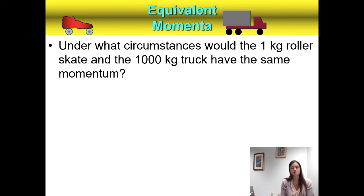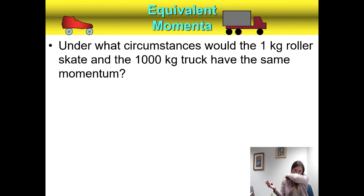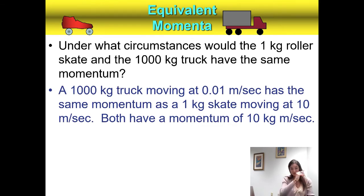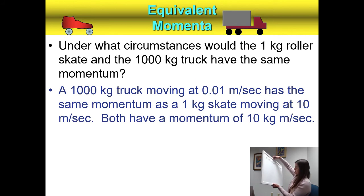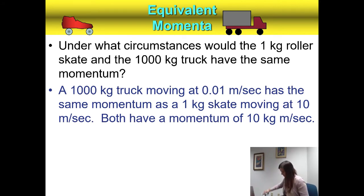Let's see if there's a circumstance in which a one-kilogram roller skate and a thousand-kilogram truck would have the same momentum. If they were both still, there would be zero momentum for each. Another example: a thousand-kilogram truck moving at 0.01 meters per second has the same momentum as a one-kilogram skate moving at 10 meters per second — both would have a momentum of 10 kilogram-meters per second. Mass is kilograms, velocity is meters per second, so we keep an eye on units.